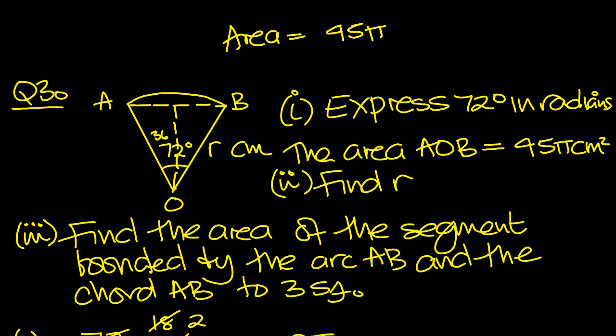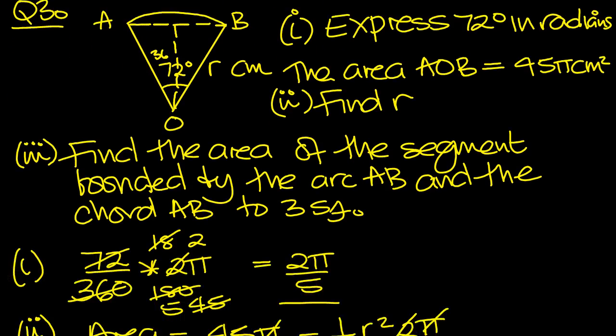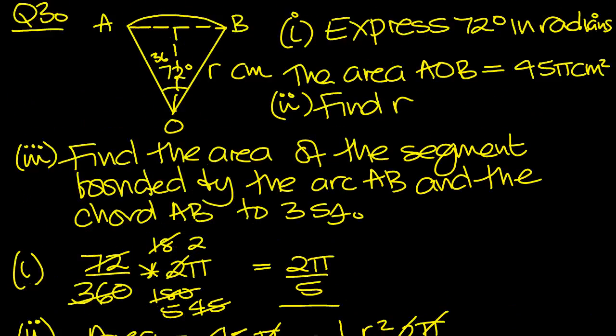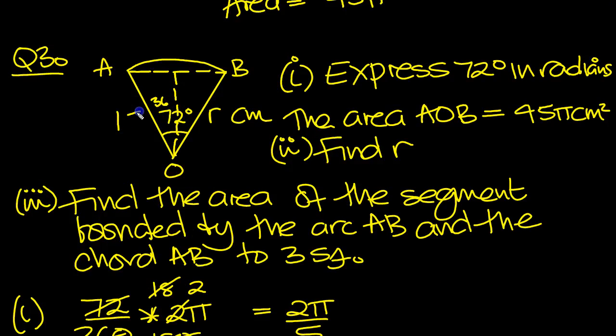This radius here, the radius is 15 centimeters. Okay, so we've got 15, we've got 36 angle, this is 90. So we can work out these sides, can't we? Half base times height.